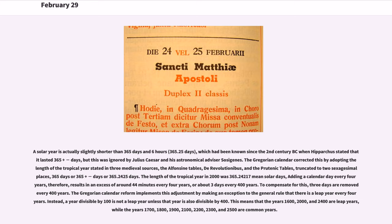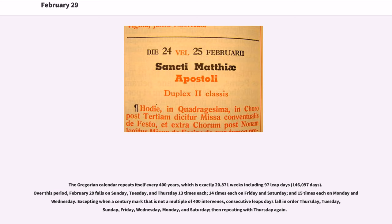The Gregorian calendar repeats itself every 400 years, which is exactly 20,871 weeks including 97 leap days — 146,097 days. Over this period, February 29th falls on Sunday, Tuesday, and Thursday 13 times each, 14 times each on Friday and Saturday, and 15 times each on Monday and Wednesday.